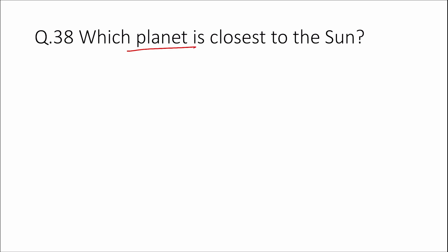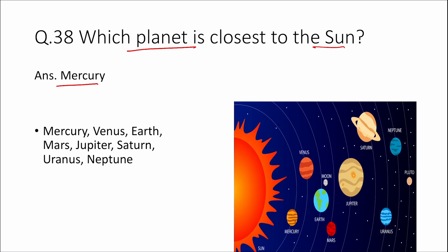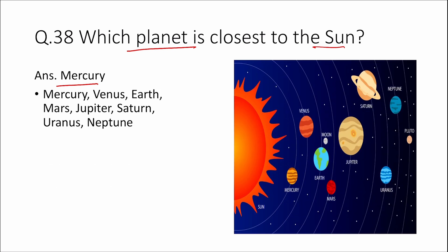The order of the planets from nearest to furthest from the sun is: Mercury, Venus, Earth, Mars, Jupiter, Saturn, Uranus, and Neptune is the furthest planet from the sun.